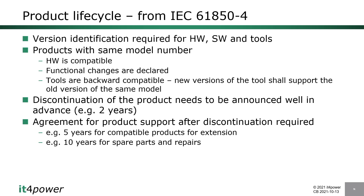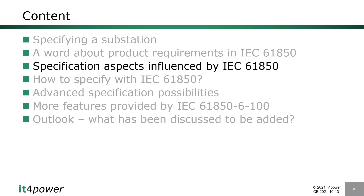Part 4 also addresses product discontinuation — how long a product supply must be guaranteed — and describes agreements for product support after discontinuation, such as five years for compatible replacement products or ten years for spare parts and repairs. This part describes these requirements in a global way and gives ideas for what to agree upon with your product vendor.